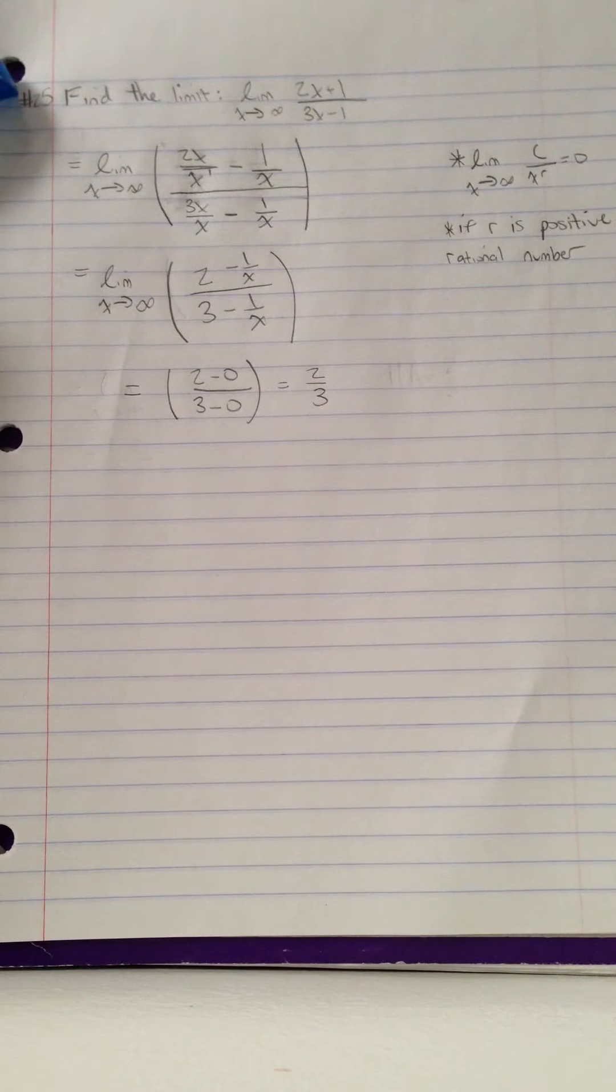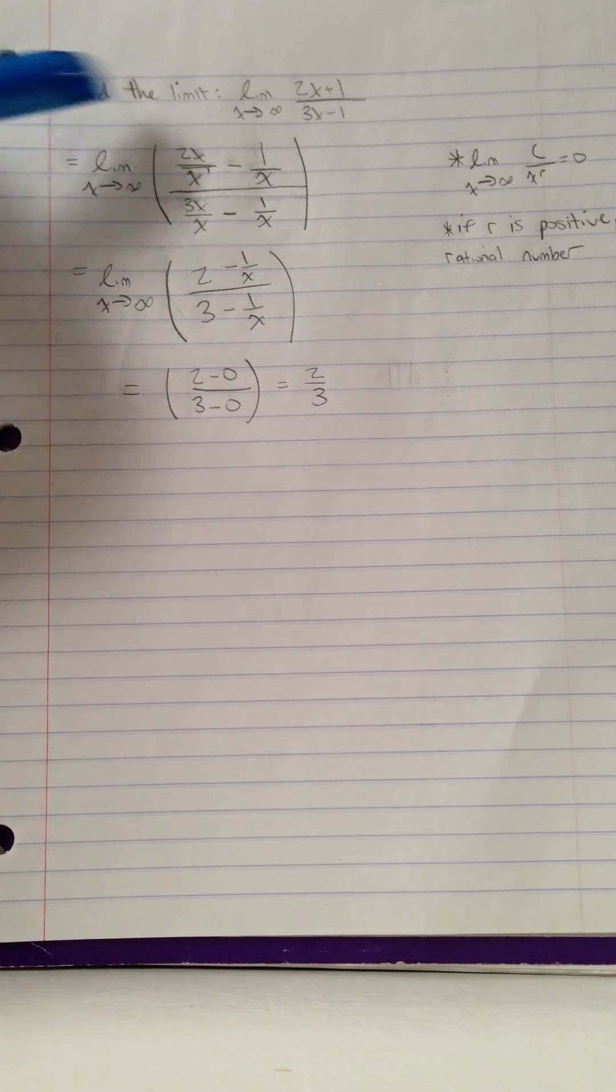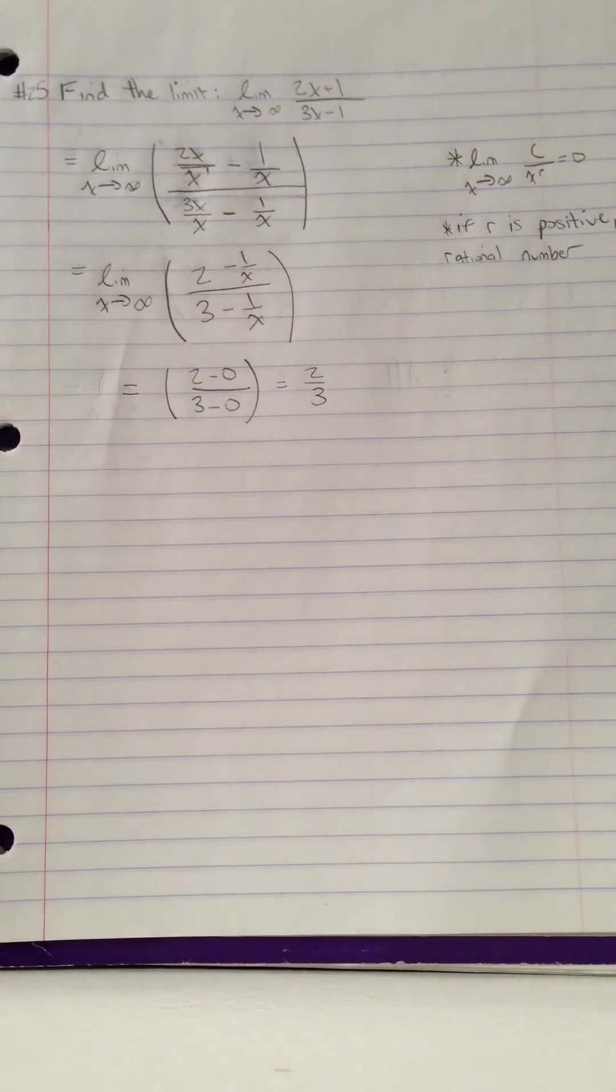All right, our problem is find the limit as x approaches infinity of 2x plus 1 divided by 3x minus 1.